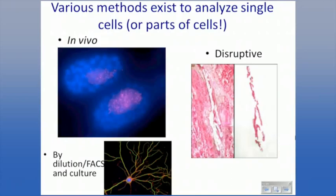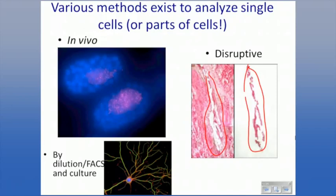We'll talk about different ways to analyze single cells. You can dilute cells down and analyze them by FACS. You can pull cells out of tissue — in this case by laser capture microdissection, where we can pull out specifically these particular cells we're interested in. We also talked about doing things in vivo — in this case C. elegans embryos where a particular single mRNA has been labeled, each dot being a single mRNA.